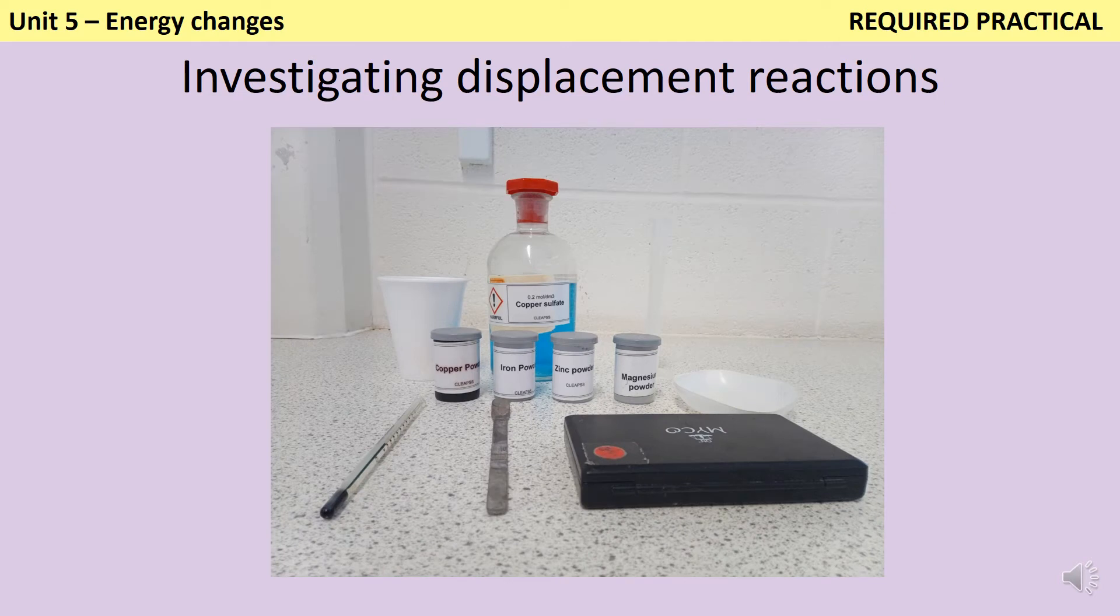I'm going to investigate the impact when I change the metal added to the copper sulfate. So in other words, the type of metal is my independent variable. This means that I need to keep the other four variables I identified - the mass of the metal, the surface area of the metal, the volume of the copper sulfate solution, and the concentration of the copper sulfate solution - the same.